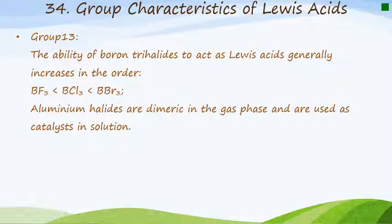If we go to group 13, which is the group that contains boron at the top, the ability of the boron trihalides to act as Lewis acids generally increases in the order that's given. So we first have boron trifluoride, then boron trichloride, then boron tribromide. The aluminium halides are found to be dimeric. What does that mean? They form dimers, which means they're joined together and they're used as catalysts in solution.